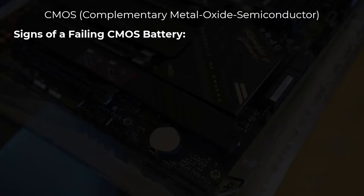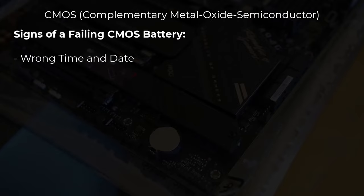Here are the signs of a failing CMOS battery. Knowing the signs of a weak or dead CMOS battery can help you fix problems before they get worse. Common symptoms include: wrong time and date — your computer keeps showing the wrong time and date, often resetting to a default date like January 1st 2000 or 2024 after a restart, which you can confirm in the BIOS setup. Also, reset BIOS settings — if your custom BIOS settings keep reverting to defaults, the CMOS battery could be failing.